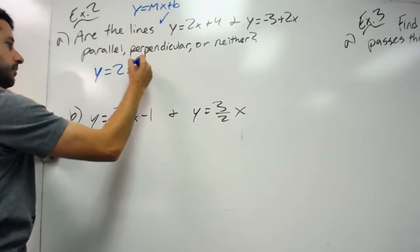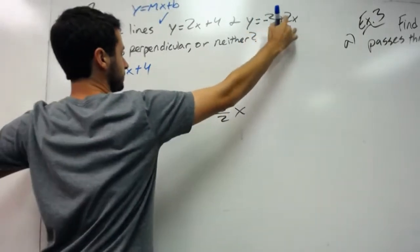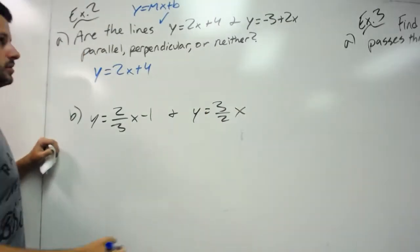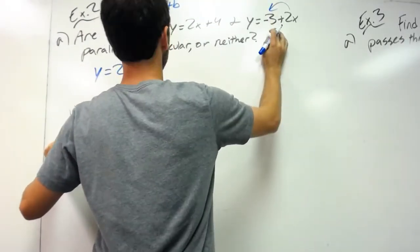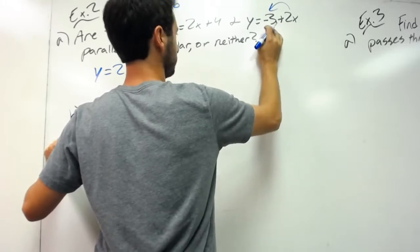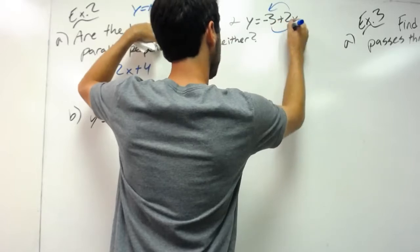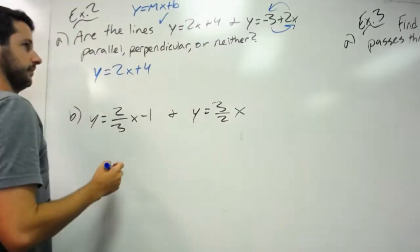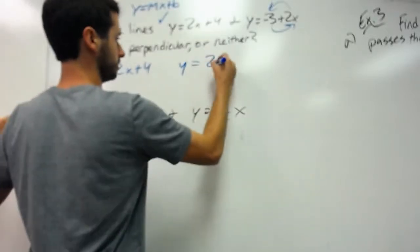This one already has that form, y equals 2x plus 4. Once we get it here, we'll be able to look at the slopes. This one has it swapped. I want to move the 2x to where it's supposed to be in the linear equation, and move the negative 3 to the b slot. That gives me y equals 2x minus 3.